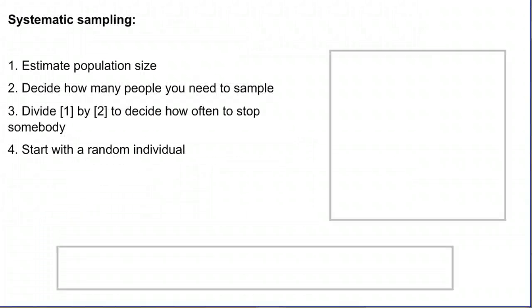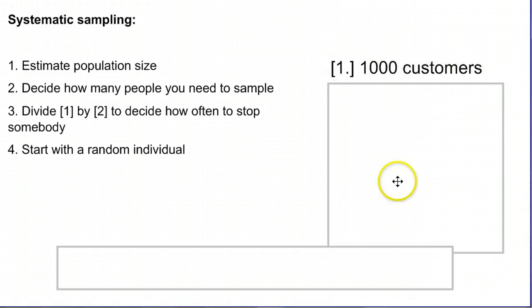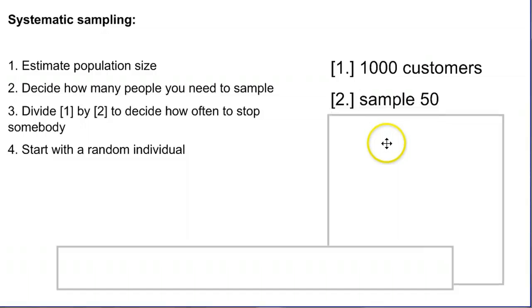So let's run through a quick example. If we estimate the population size, that's how many people we think are going to come into this store. So our population is Tuesday afternoon shoppers at the grocery store. Let's say we get a thousand customers. Second thing is how many people we actually need to sample. Let's say we did some calculations and we only need to sample 50 people.